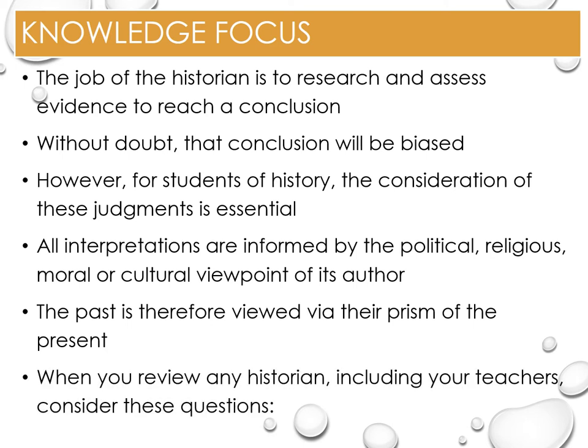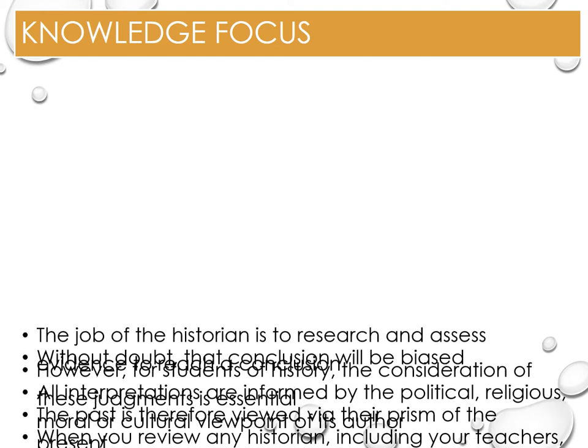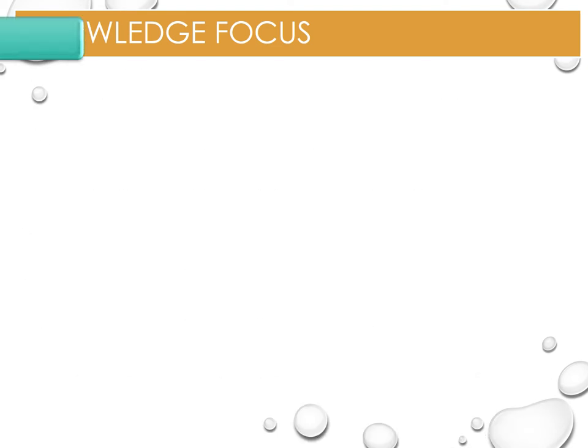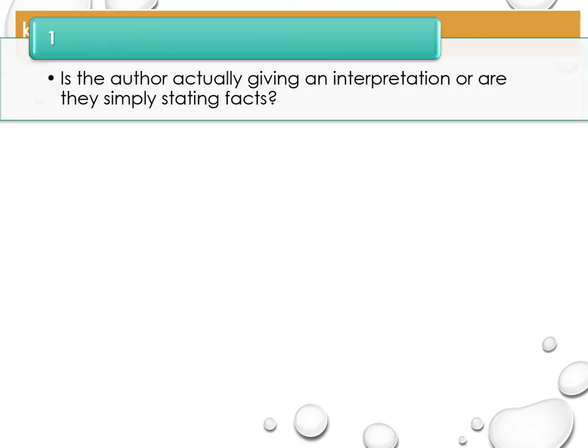Therefore, when you review any historian - and that includes me as your teacher - consider these basic questions. Question 1: Is the author actually giving an interpretation, or are they simply stating facts? Are they using evidence to back up their view, or are they just telling you what happened? All outcomes must be based on the telling of evidence.